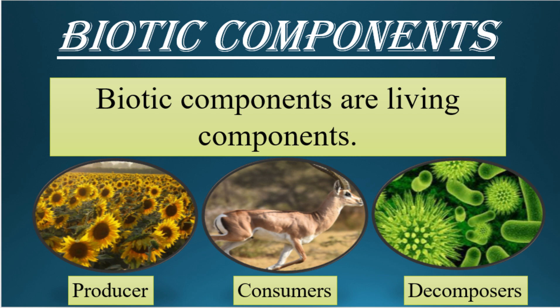Another example of biotic components is decomposers. Decomposers are those organisms that break down dead organisms or dead organic material into simpler forms. They are also called detritivores. For example, microorganisms like bacteria, viruses, and small insects and worms are examples of decomposers. They break down dead complex organic substances into simpler form.